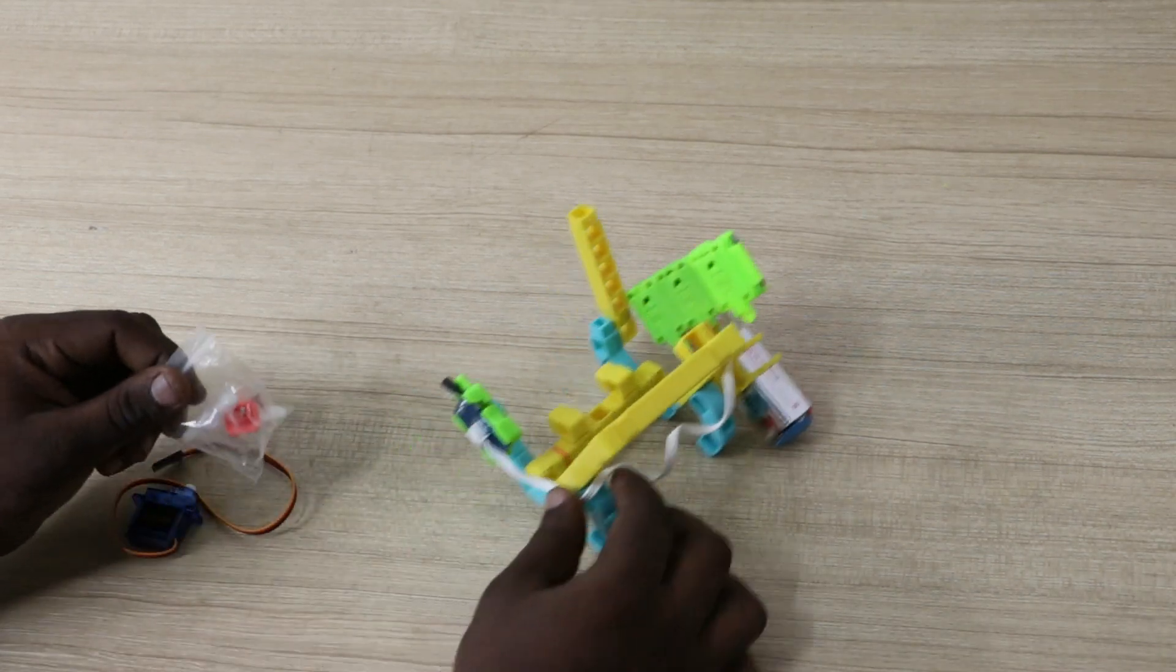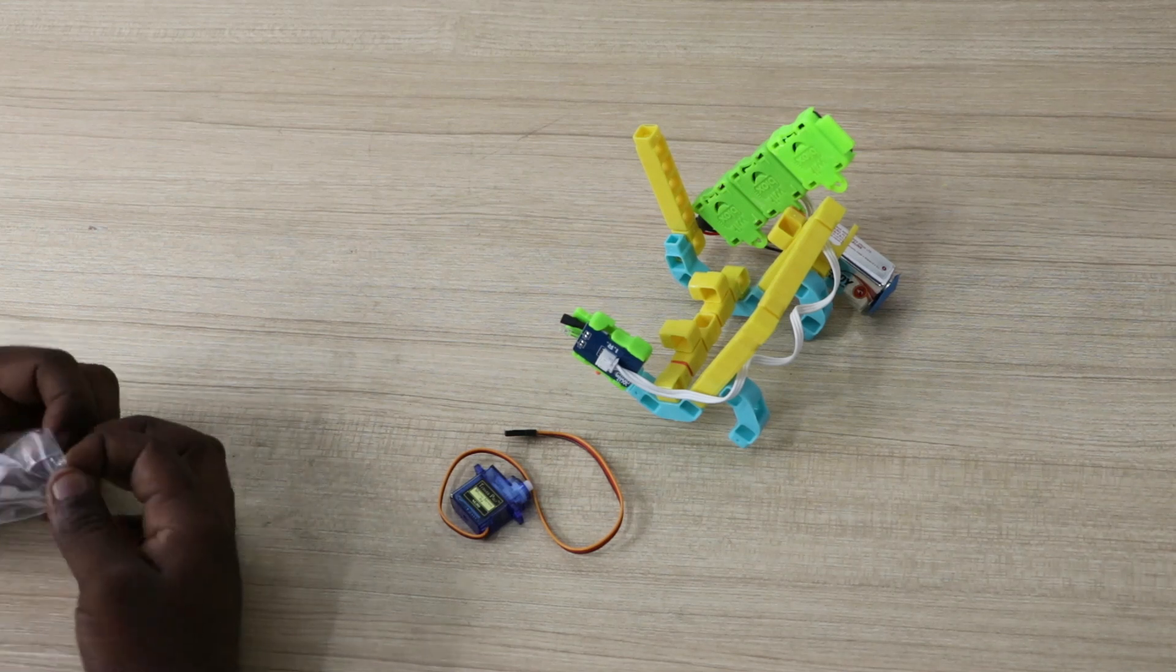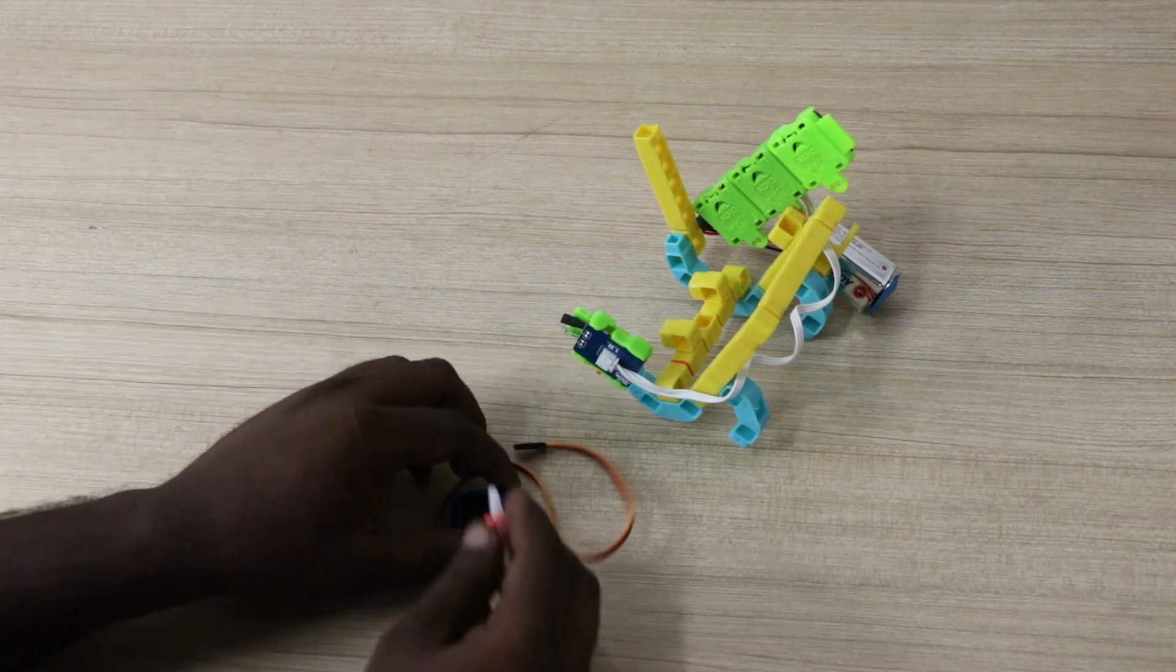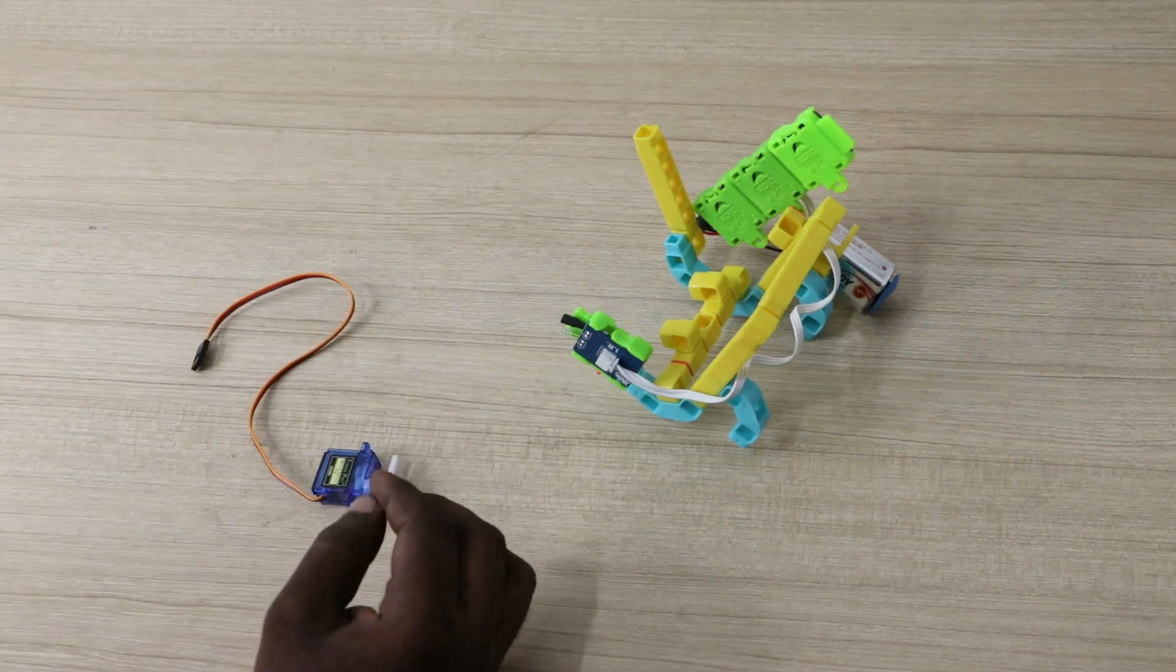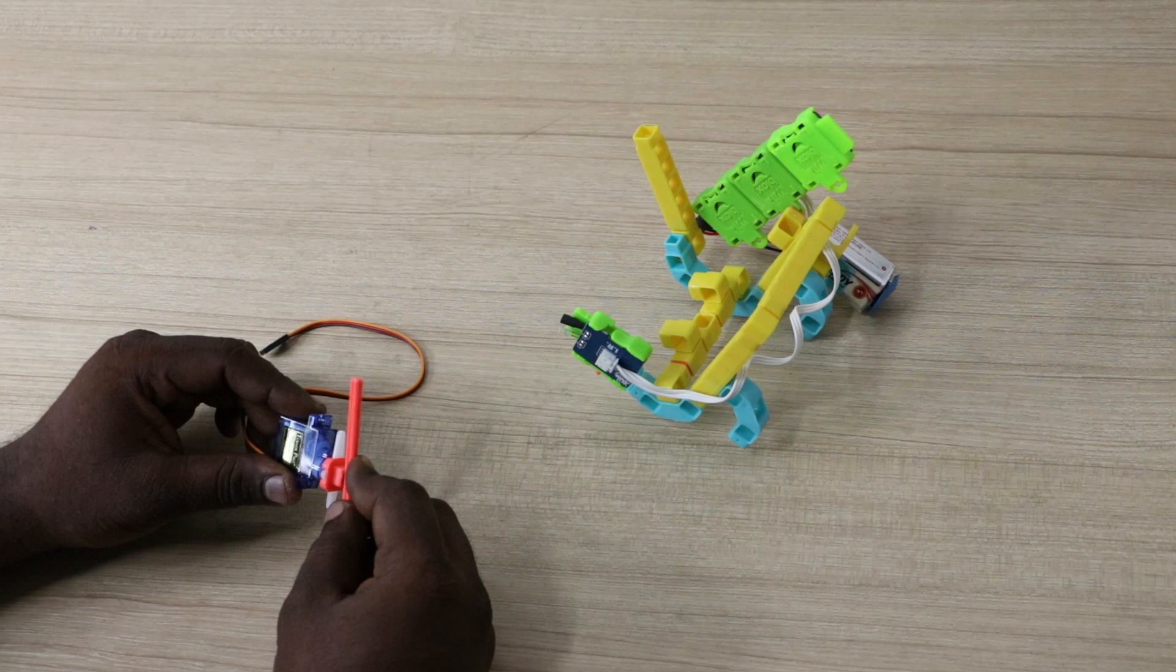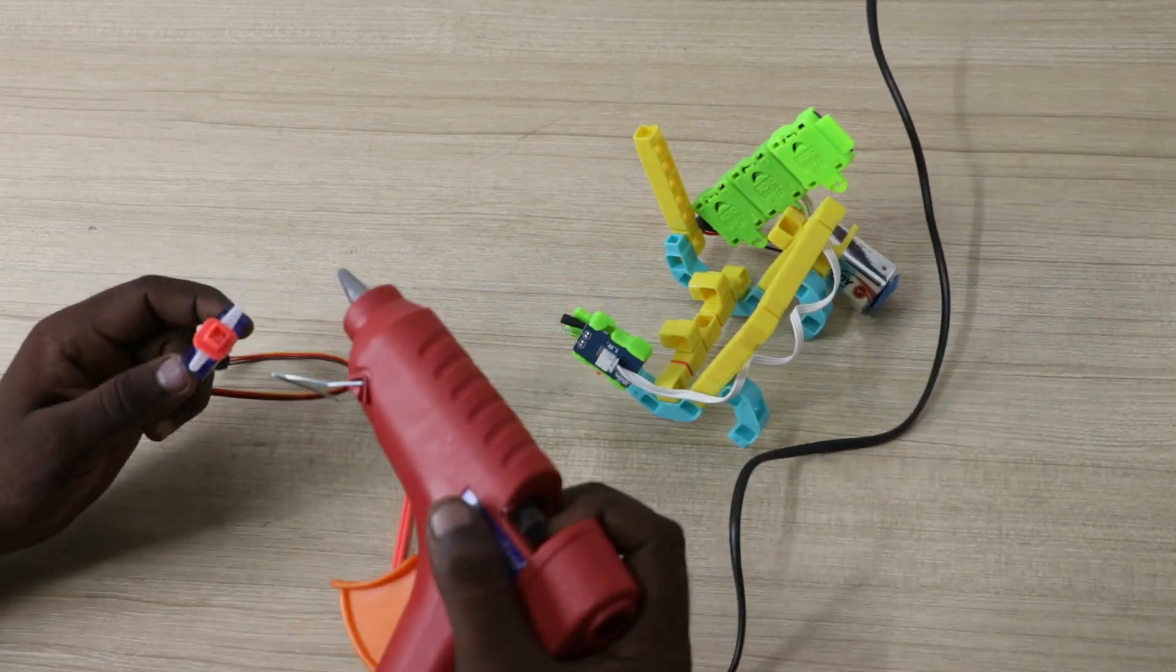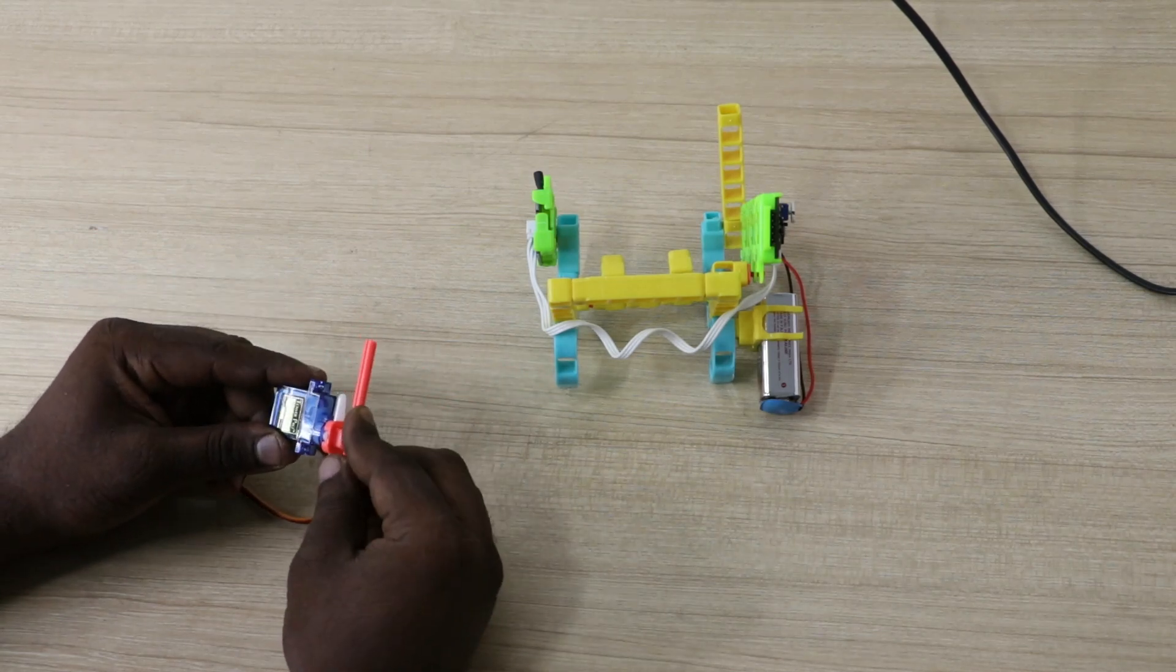Take a servo and a shaft and attach it together. Take the servo and shaft and attach it to the building structure and attach it to the power blocks.